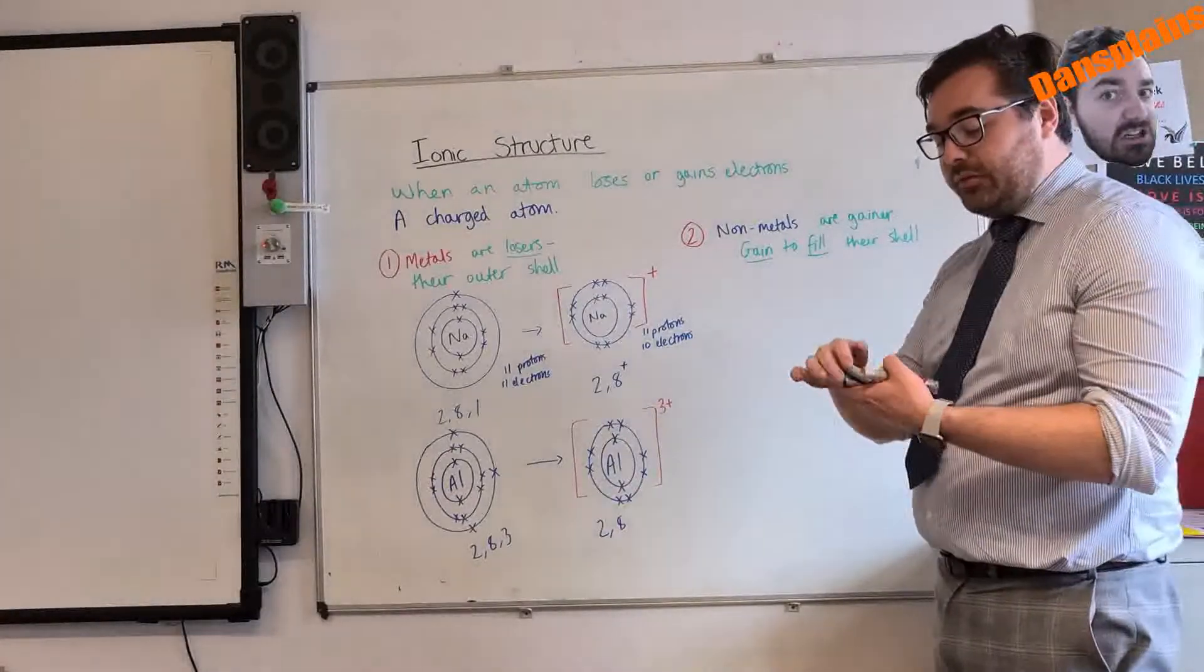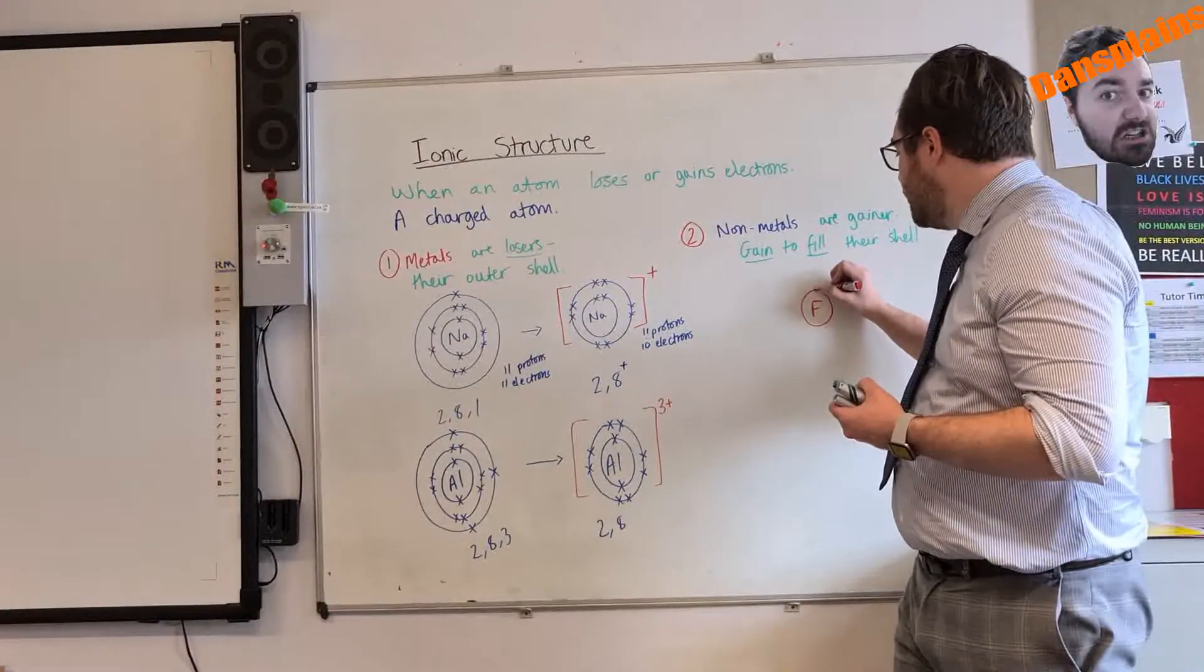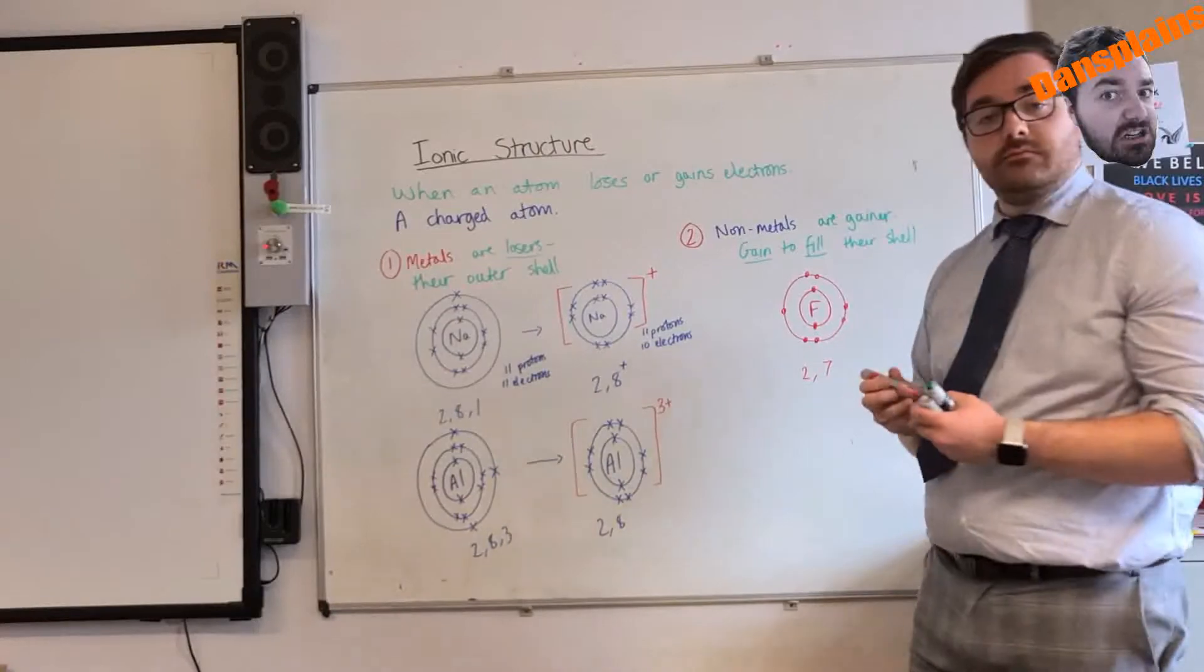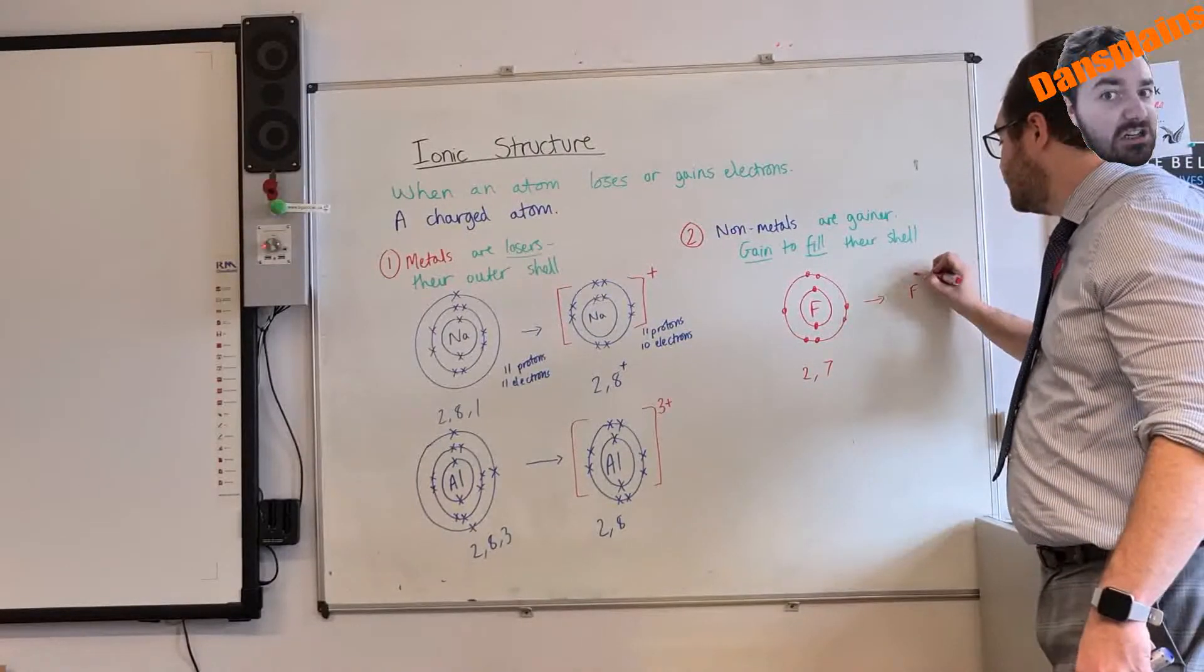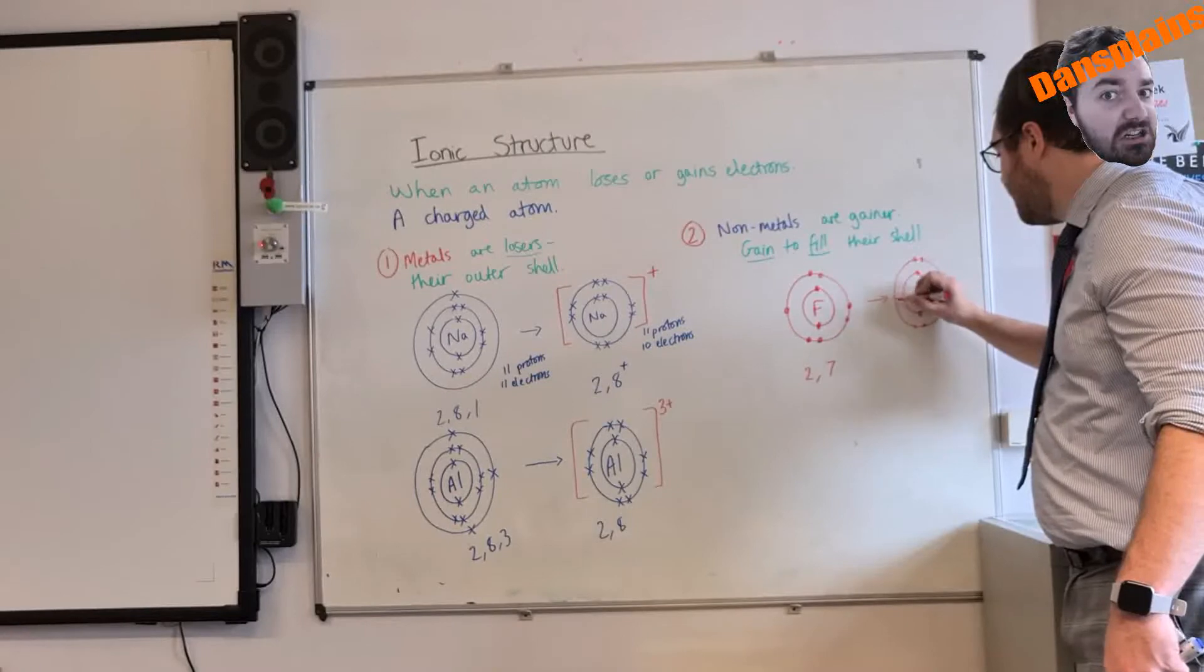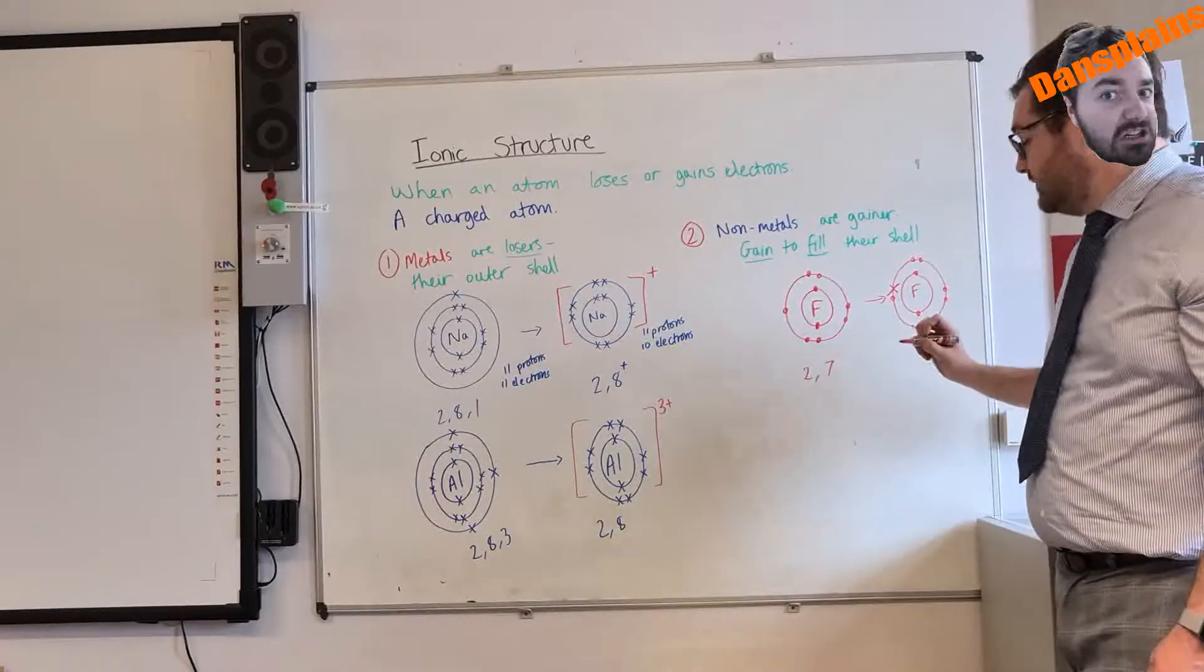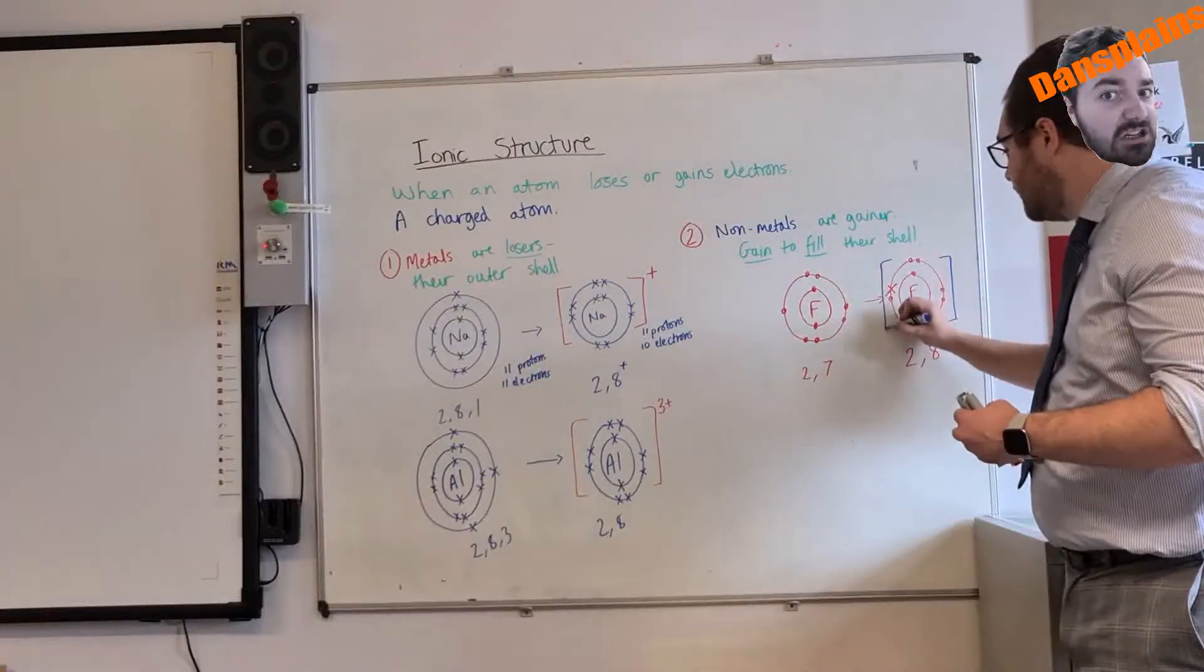So we are going to use a couple of examples on this. The first one will be fluorine. Now fluorine began with 2, 7. Suddenly, when this gains to fill in its outer energy level, we get 2, 8. Now we have that one gap there where it should be 8, and so it has gained it. You will notice that I used a cross instead of a dot. That's to show it's come from somewhere else. So it is 2, 8, and because I now have one extra electron, it's 2, 8, minus.